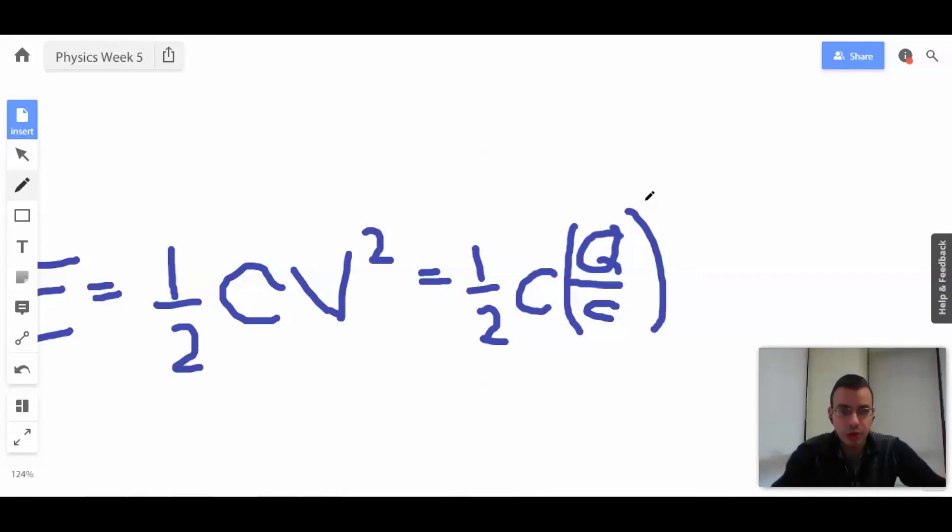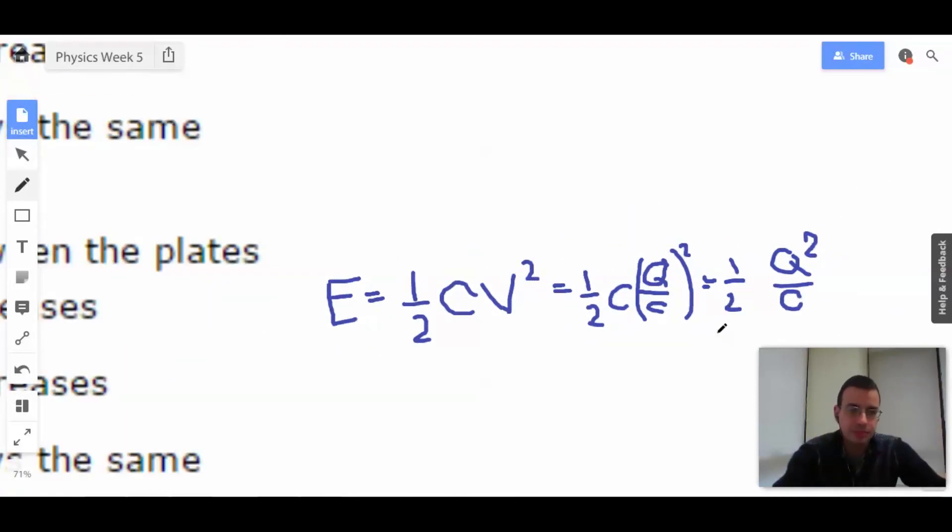One-half C Q over C. This will be squared, which will give us one-half. Let's see, one of the C's will cancel, so we'll get Q squared on top over a C on the bottom.